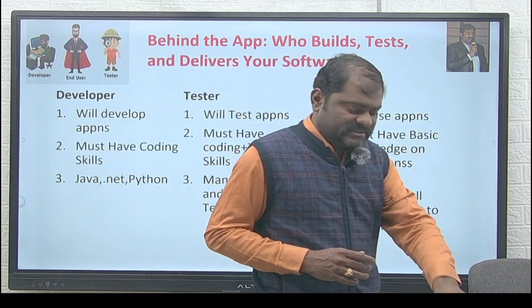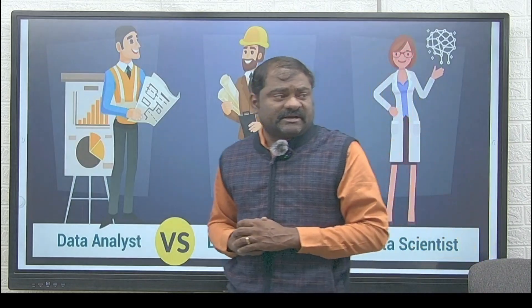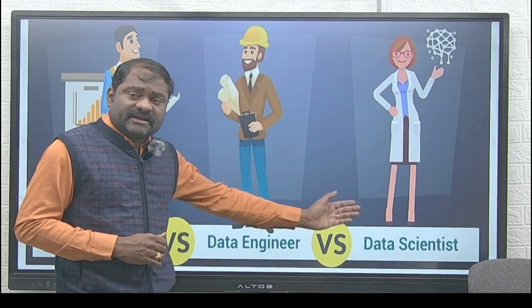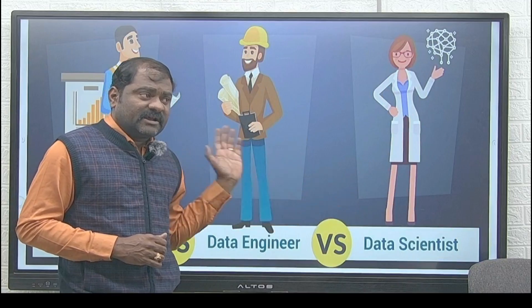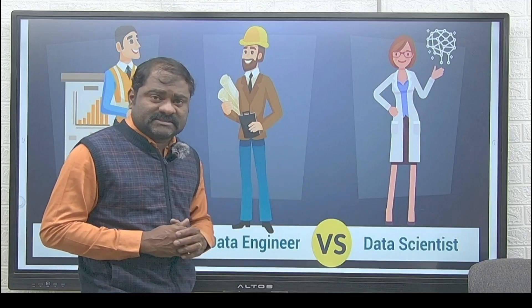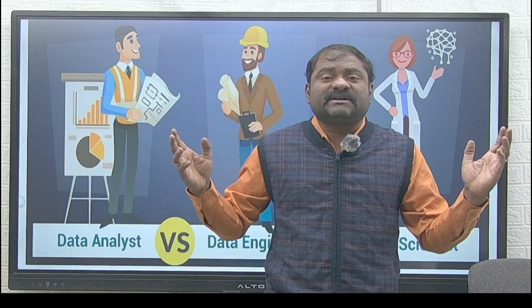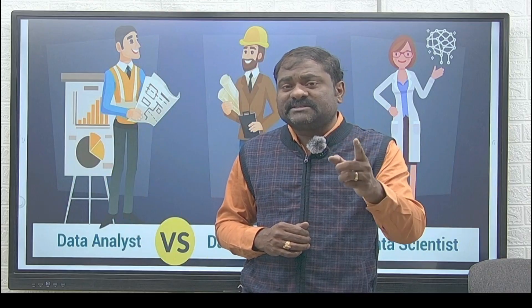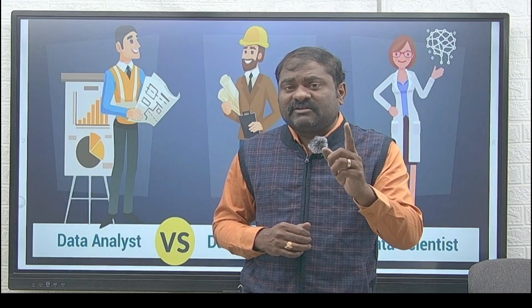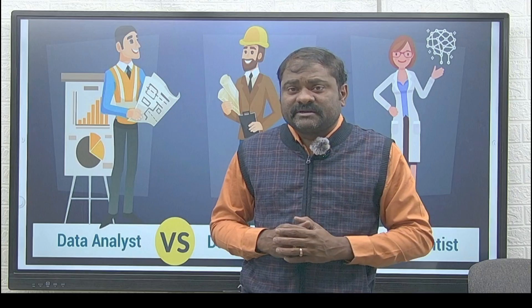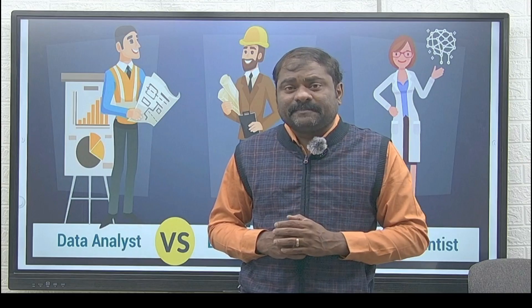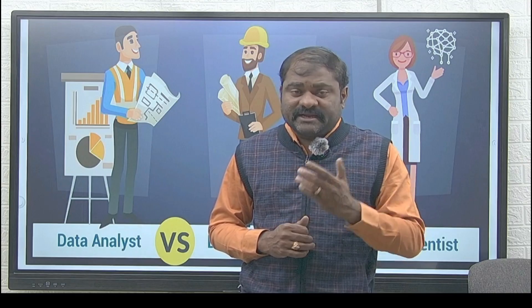The end user uses the applications and must have basic knowledge of mobile and laptop — knowing how to install apps from the Play Store and how to use them, such as Swiggy, Ola, Rapido, and Uber. These are the main pillars in the IT industry: developer, tester, and end user. Apart from these, data analyst, data engineer, and data scientist are also main pillars. The overall goal of all employees is to develop and deliver a successful software product that works perfectly and efficiently.